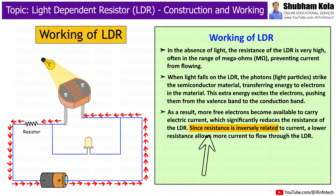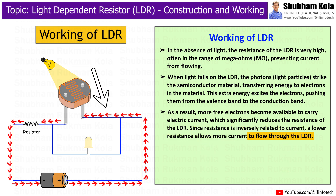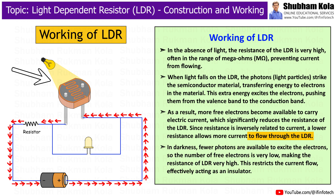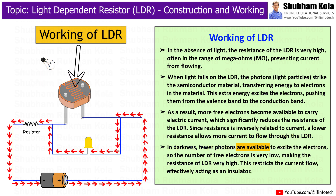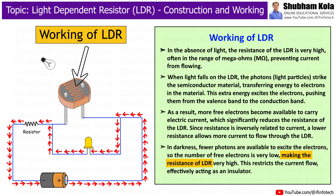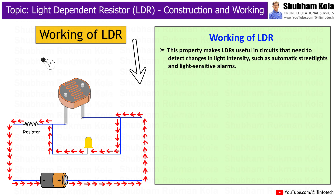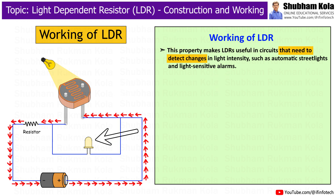Since resistance is inversely related to current, a lower resistance allows more current to flow through the LDR. In darkness, fewer photons are available to excite the electrons, so the number of free electrons is very low, making the resistance of LDR very high. This restricts current flow, effectively acting as an insulator. This property makes LDRs useful in circuits that need to detect changes in light intensity, such as automatic streetlights and light-sensitive alarms.